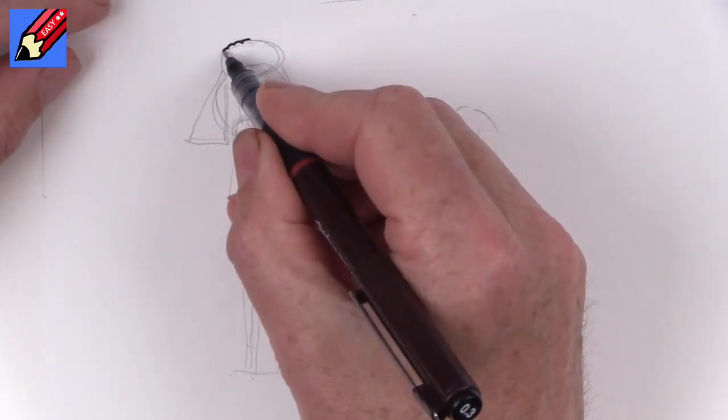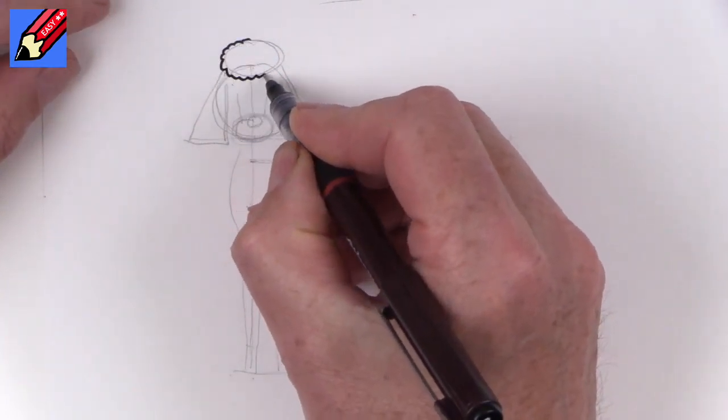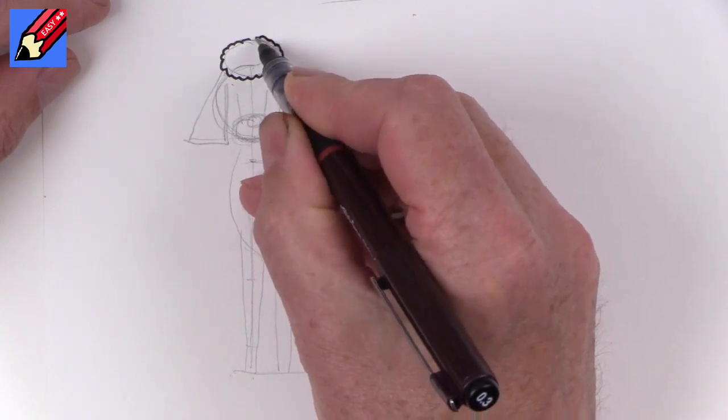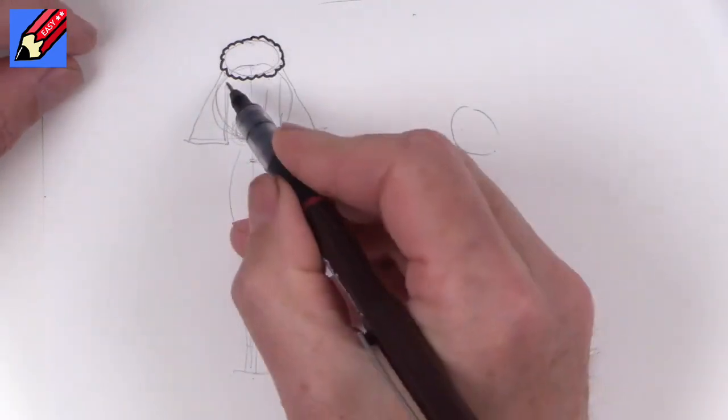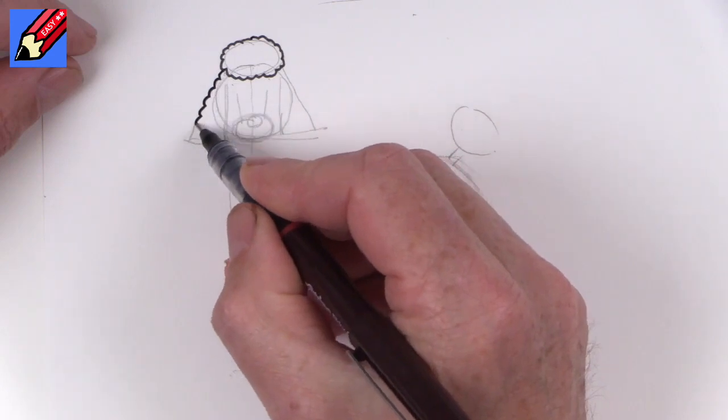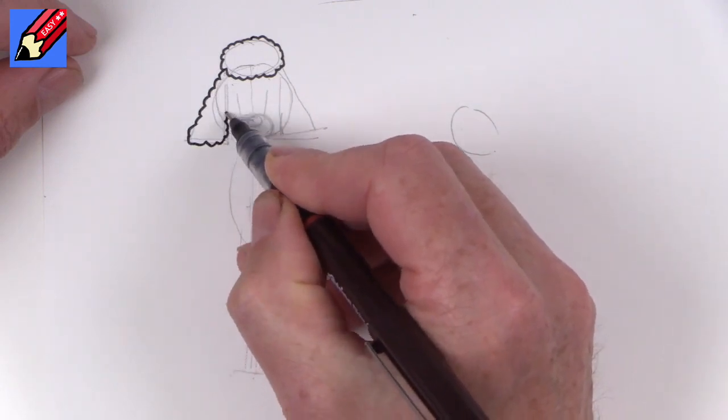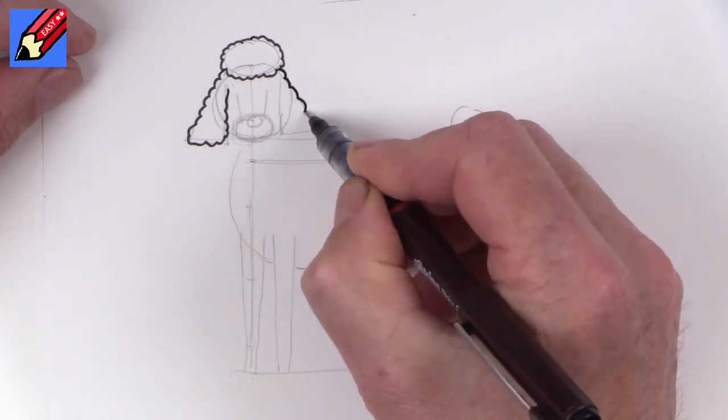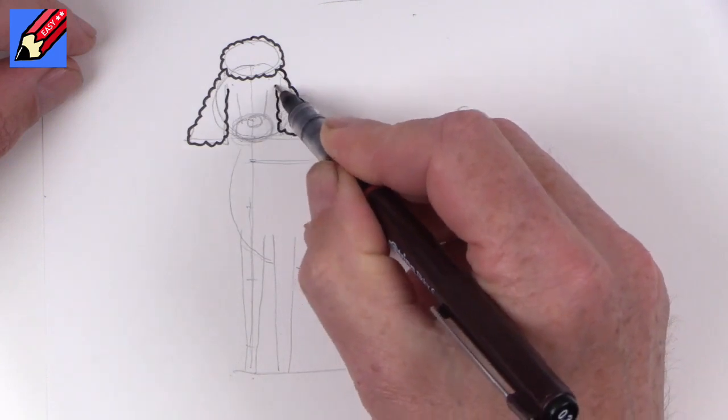So I'm going to start with this bit up here. And being a poodle we want this kind of poodley fur edge to everything. And we can do the ears as well. So they'll be coming kind of round the corners a little bit like that. So we can come up to there.